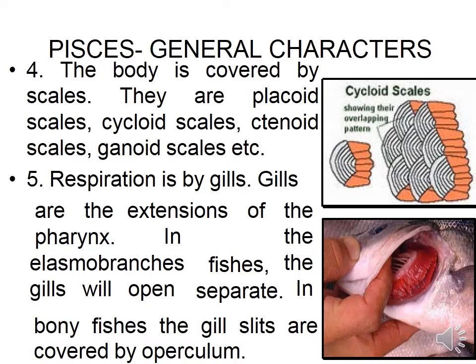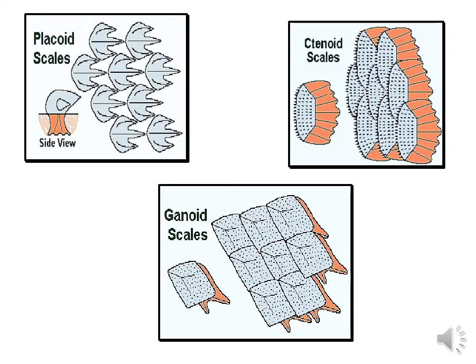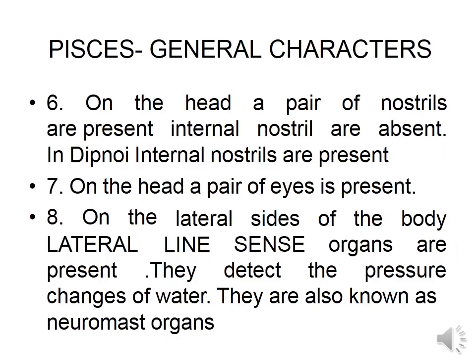In cartilaginous fishes, gills open into the gill chamber, and through gill slits water passes out. Gill slits are a characteristic feature of vertebrates present in Chondrichthyes fishes. Placoid scales are found in Chondrichthyes forms, while ctenoid, ganoid, and cycloid scales are found in bony fishes. On the head, a pair of nostrils are present; internal nostrils are absent except in Dipnoi, where they are also present.